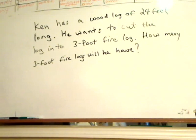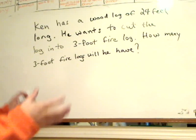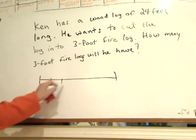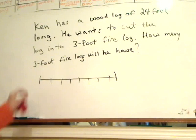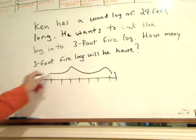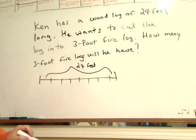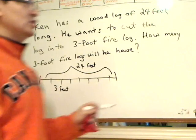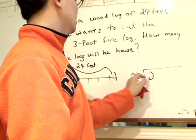Alright, so let's do the question. This question is quite straightforward, in the sense that we want to see how many 3-foot fire logs will he have when you start out with a very long piece of wood. So we're going to divide it into 3-foot long. If this whole thing represents 24 feet of log, and then we want to get 3 feet each, how much would that be? The question would be to divide 3 into 24.